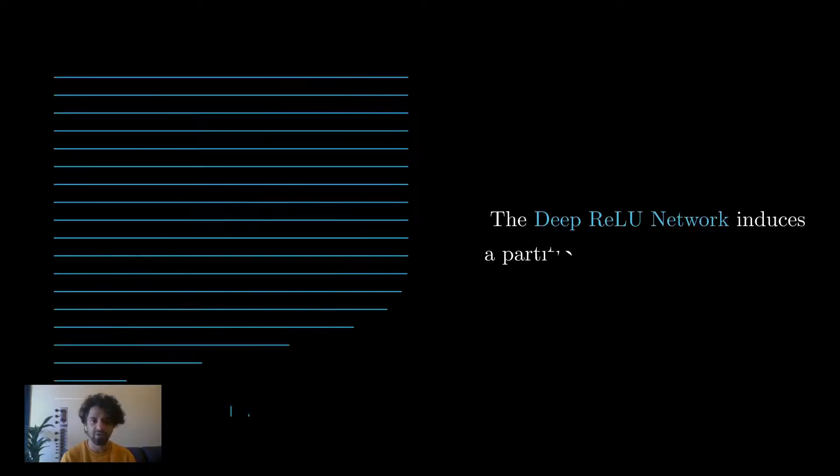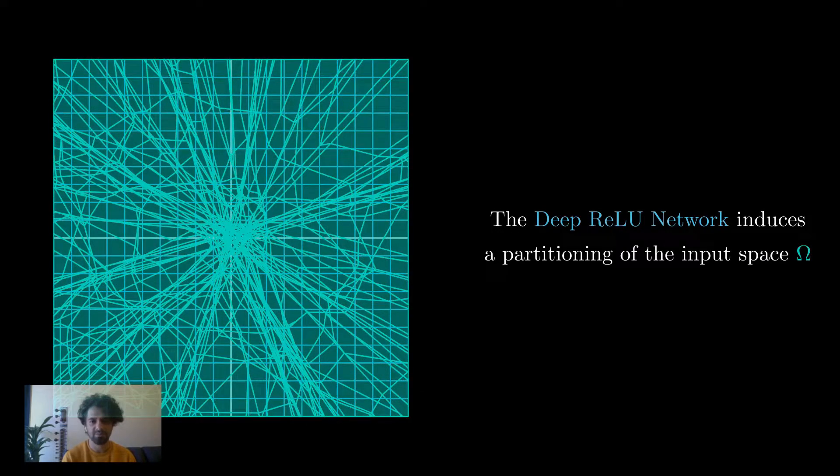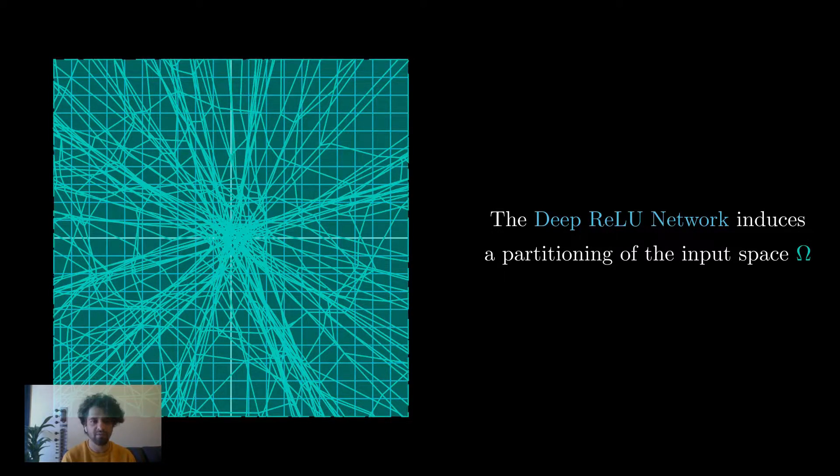The deep ReLU network induces a partitioning omega of the input space as a collection of convex polytopes. The partitioning is formed by the piecewise defined nonlinearities of the network.